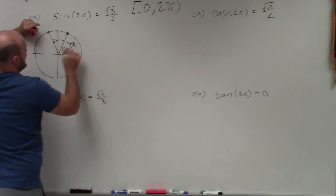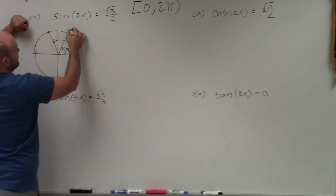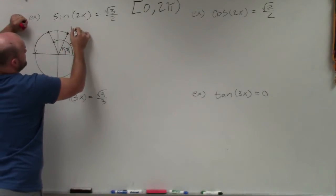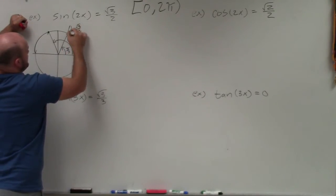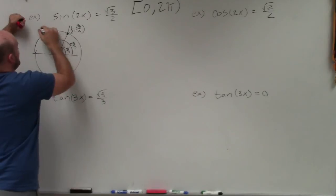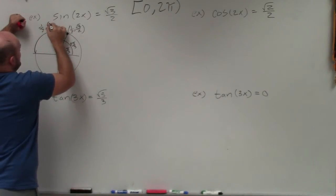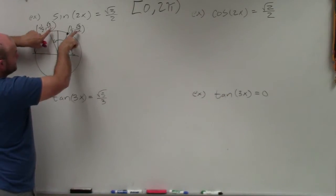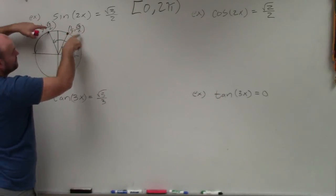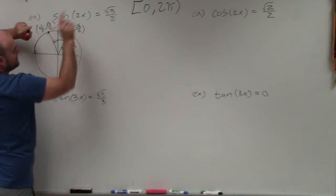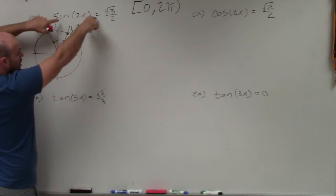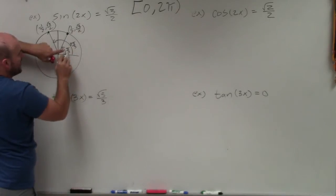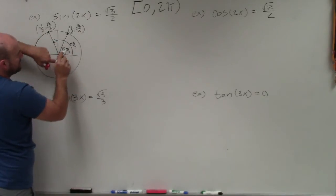Just a quick reminder — let's go through these points. This point is (1/2, √3/2) and this point is (−1/2, √3/2). You can see that at both of these angles, the y-coordinate is going to be √3/2. So the angles that solve this are π/3 and 2π/3.